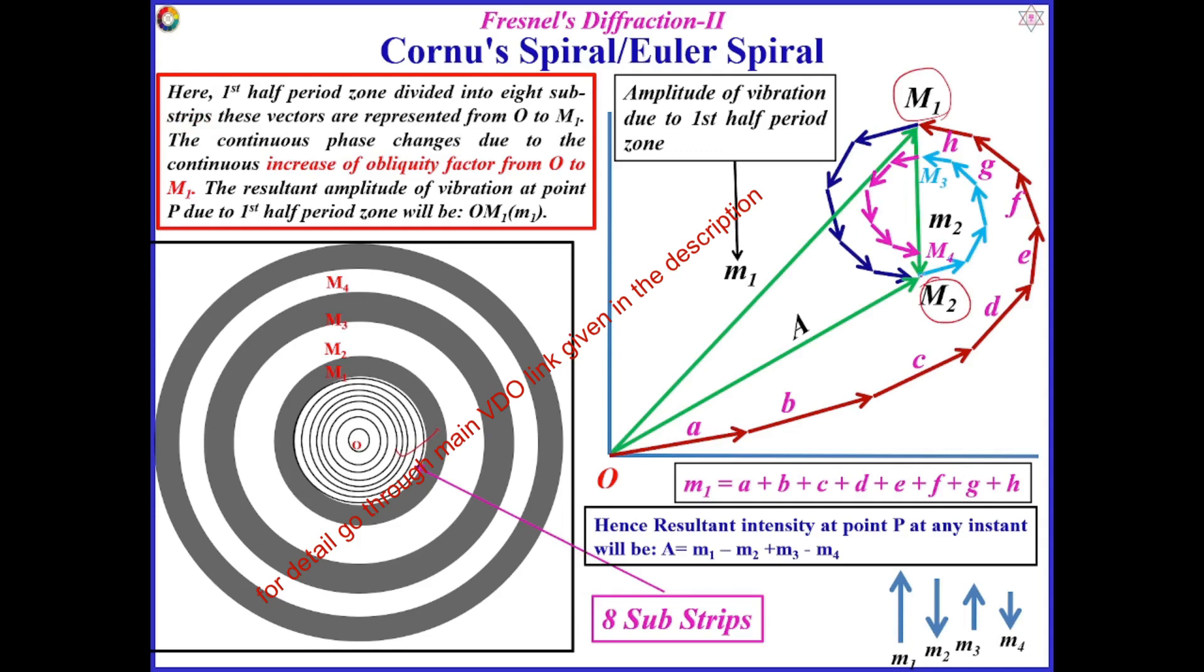For the third half-quarter zone, from here to M3. For the fourth half-quarter zone, this will be up to M5. For the fifth half-quarter zone, it will be up to this much. For the sixth half-quarter zone, it will be up to this much.